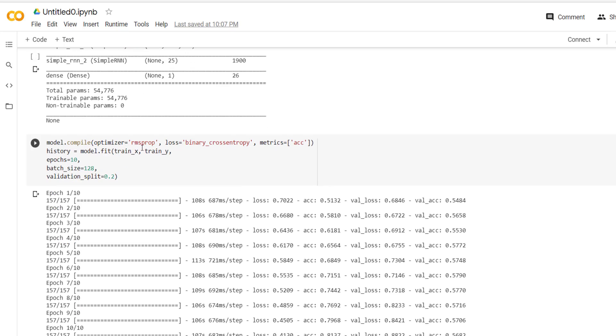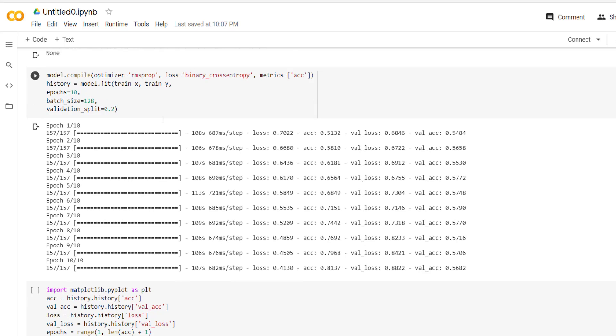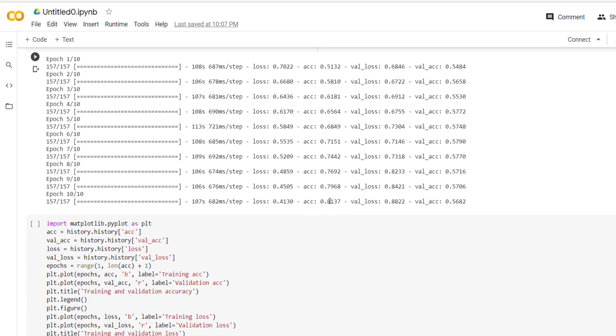Then we have used RMSprop as an optimizer, binary cross entropy as a loss, accuracy as a metric, and we have trained our model. We have got accuracy close to 81 percent. Validation accuracy is 57 percent. So this model suffers from high variance, that is overfitting.